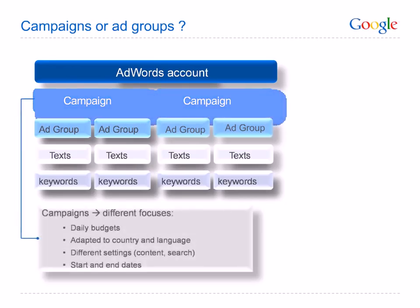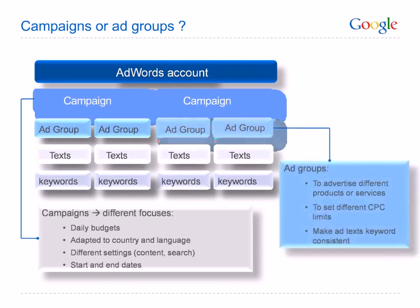Create a new campaign to set a new daily budget, choose language and location targeting options, edit settings like creating search or content-only campaigns, or to set specific start or end dates like for a Christmas campaign that you want to end on the 25th of December. Create a new ad group to group keywords together according to theme and match them to a corresponding ad text. You can often split existing ad groups into more precise ad groups to group subcategories of products.